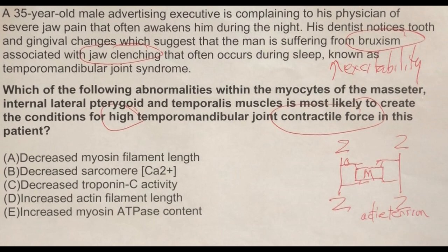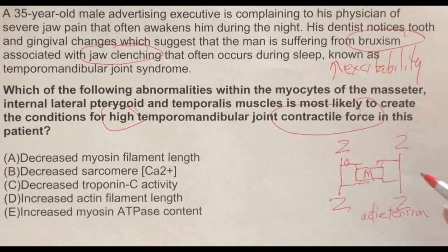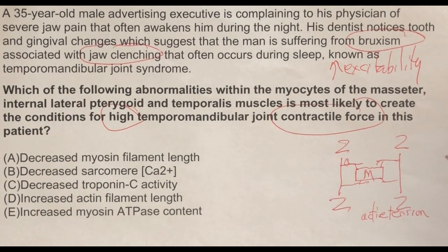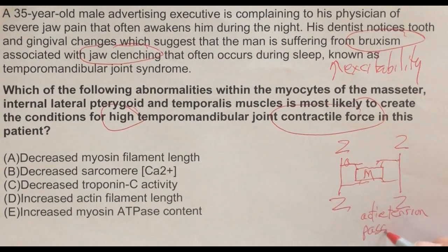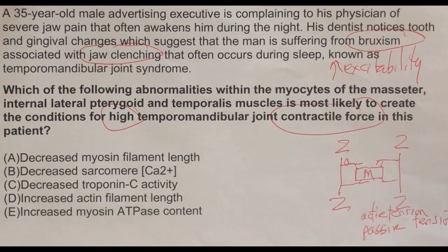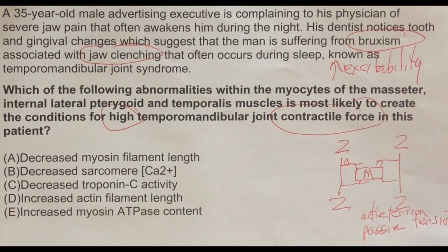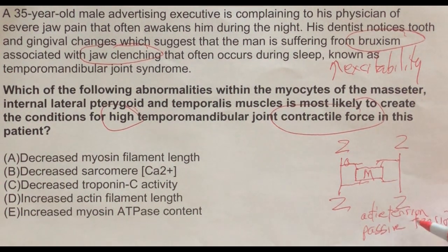Active tension is generated during contraction. Now, if the person is at rest, their muscles may not be contracting, but they may have another kind of tension called passive tension. Passive tension occurs when the muscle has not been depolarized by the motor neuron, acetylcholine, or the nicotinic acetylcholine receptor. So we can get high tension in a muscle either through active tension or passive tension, and we have to look at both possibilities.